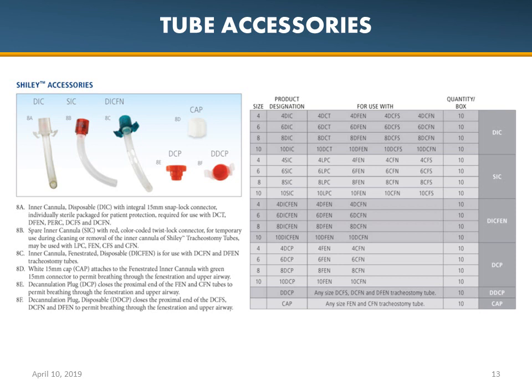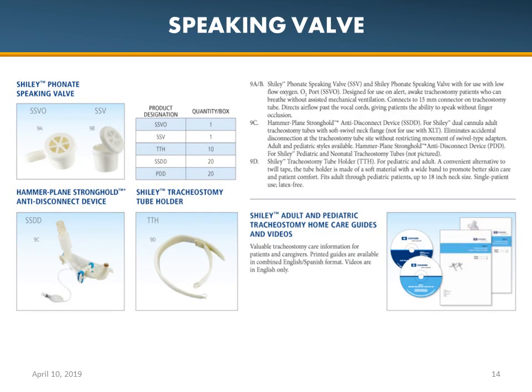Tube accessories are very common. You can see disposable inner cannulas with 15mm adapters, and decannulation caps, which are in place for people trying to eventually breathe through their normal airway structures. We also have speaking valves, which are one-way valves that only allow inspiration — forcing air up through the normal glottic opening and allowing patients to speak through their vocal cords. It's essential to know you cannot have an inflated cuff in place with a speaking valve, as it won't allow the patient to ventilate.